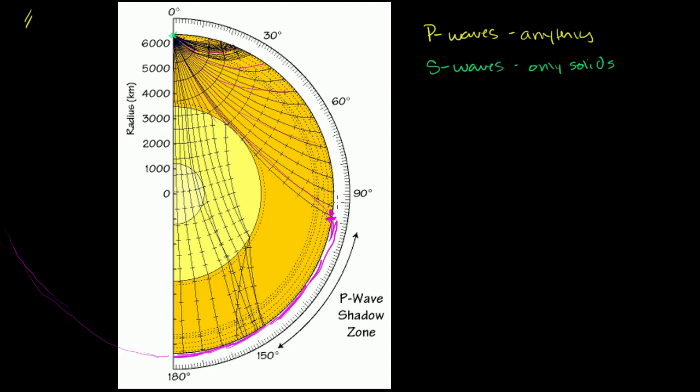And the only reasonable explanation that we can give is that there must be some material that an S wave cannot travel through, that it would have to travel through to get to these points beyond 105 degrees. And we know that S waves only travel in solids. So the assumption is that at some point beyond 105 degrees, it's hitting liquid. That tells us that there's a core and at least the outer part of that core is liquid.